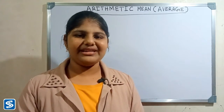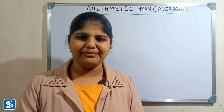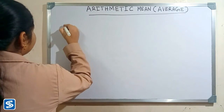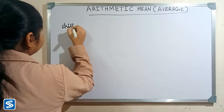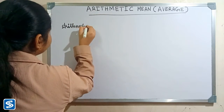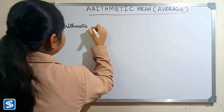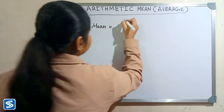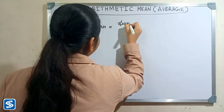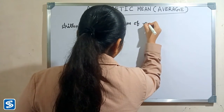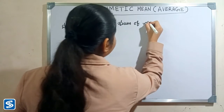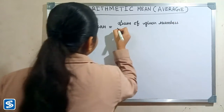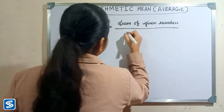To find the arithmetic mean of given numbers, first we have to find the sum of given numbers and we have to divide the sum by the number of addends. So, arithmetic mean is equal to sum of given numbers divided by number of addends.